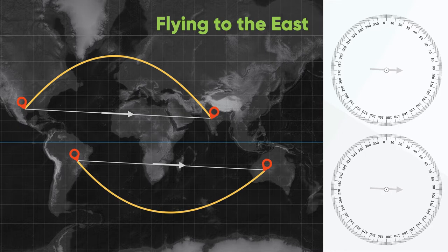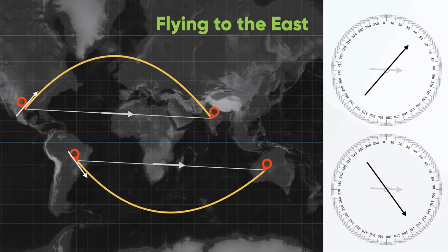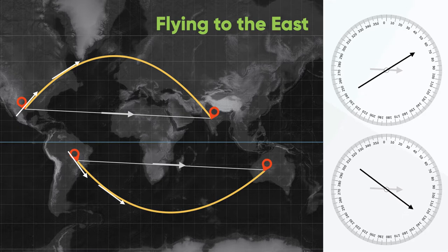If we're starting in the west of this map, going from the positions on the left and flying towards the east to the positions on the right, our rhumb line bearing from both of these positions will be just over 090. But notice how our great circle track changes as we go. If we're in the Northern Hemisphere, we start by flying a more or less northeasterly track, and in the Southern Hemisphere, we're flying a more or less southeasterly track. As we go along the great circle track, our track heading is constantly changing. In the Northern Hemisphere, our track is steadily increasing, and in the Southern Hemisphere, our track is steadily decreasing.